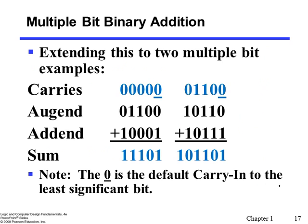For multiple-bit binary addition we do exactly the same as in the decimal number system: we add from the rightmost position, called the least significant bit. In the second case, adding those two binary numbers: at the least significant bit we have zero and one, so the sum is one with no carry. At the second position there is no carry from the previous position, so we add one and one, giving zero and carrying one to the next position. At the third position we add one and one plus the carry-in of one — one plus one plus one — giving one and carrying to the next position. We proceed this way for multiple-bit binary addition, very similar to the decimal number system.